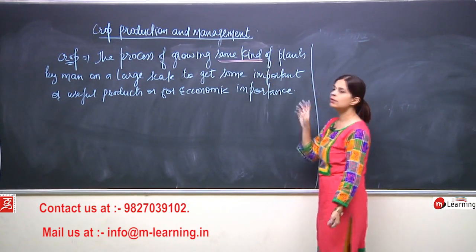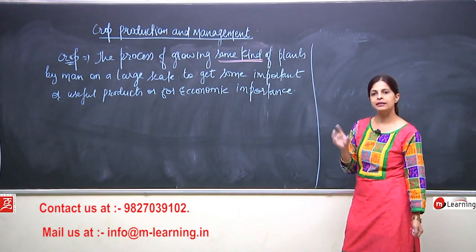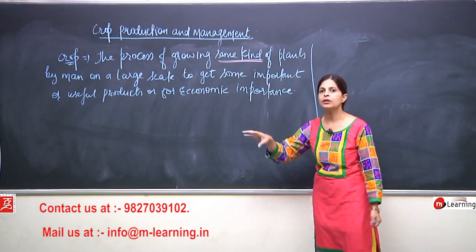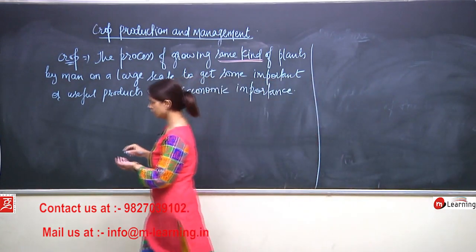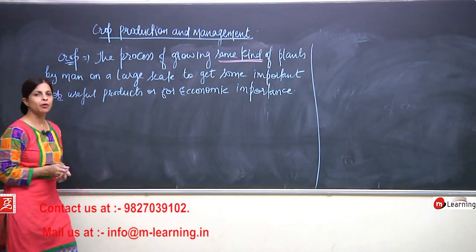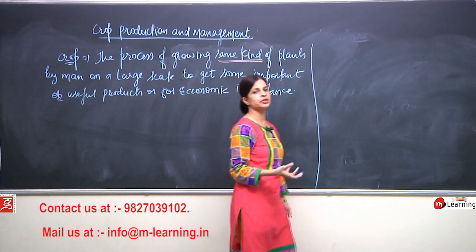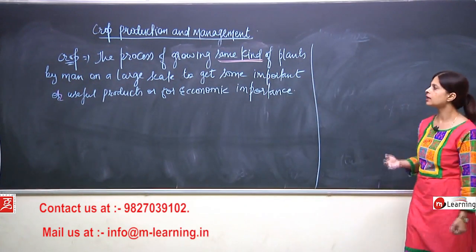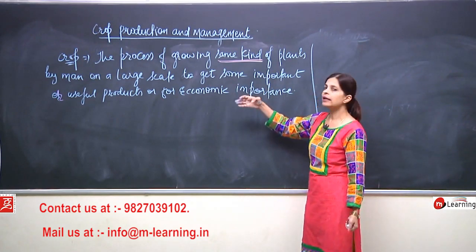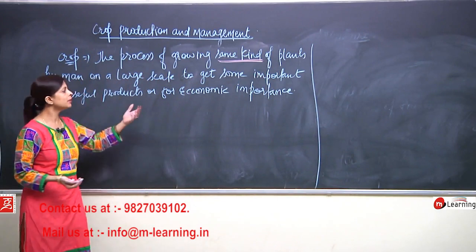The process of growing the same kind of plants by man, on a large scale — not one or two, on a large scale — to get some important or useful products, or for some economic importance. When we talk about crop production, the result may be wheat, rice, jar — all these are useful products. And it can also have economic importance, meaning it can be financially beneficial, money-giving.